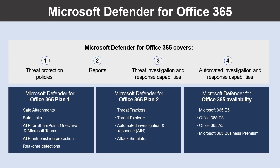Microsoft Defender for Office 365 is available in two plans. The plan you choose influences the tools you see and use, so it's important that you select the best plan to meet your organization's needs. Plan one offers configuration, protection, and detection tools for your Office 365 suite. Plan two includes all the core features of plan one and provides automation, investigation, remediation, and simulation tools. Microsoft Defender for Office 365 is included in certain subscriptions such as Microsoft 365 E5, Office 365 E5, Office 365 A5, and Microsoft 365 Business Premium. If your subscription doesn't include Defender for Office 365, you can purchase it as an add-on. Use Microsoft 365 Defender for Office 365 to protect your organization's collaboration tools and messages.